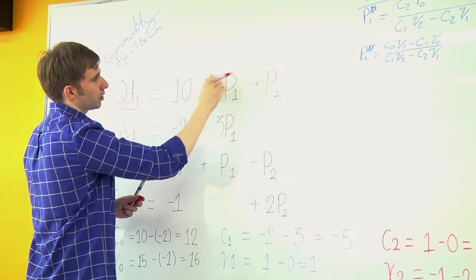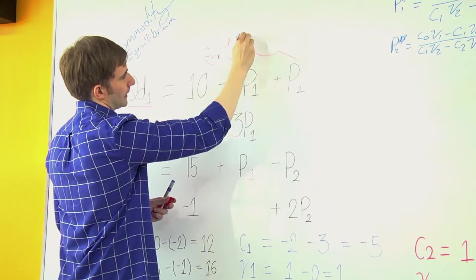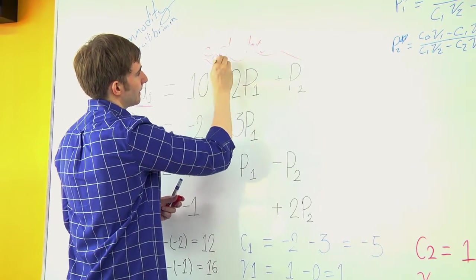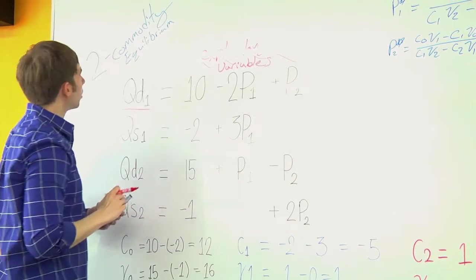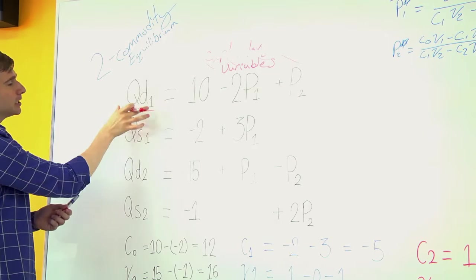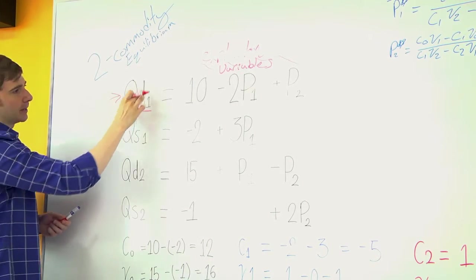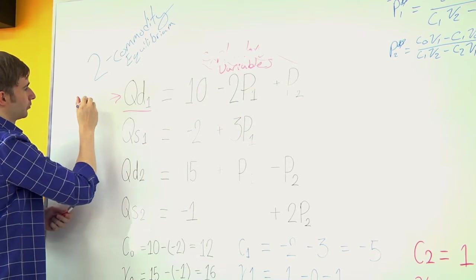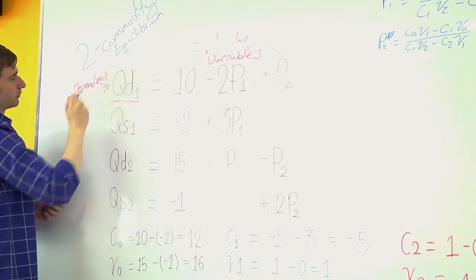These are what are known as our explanatory variables, or our independent variables. And this would be our dependent variable. This depends upon these amounts. That's our dependent variable.